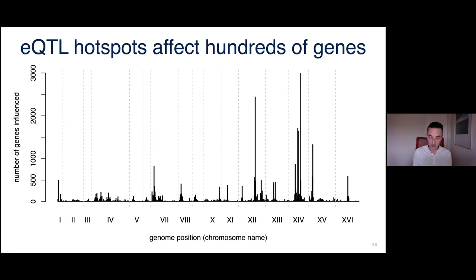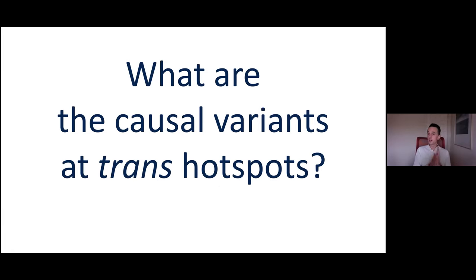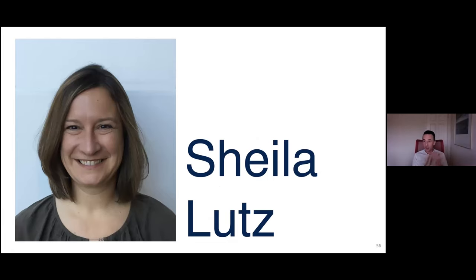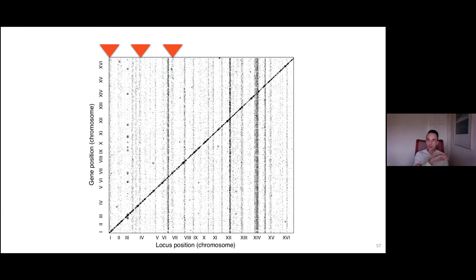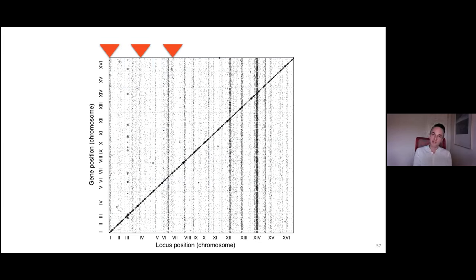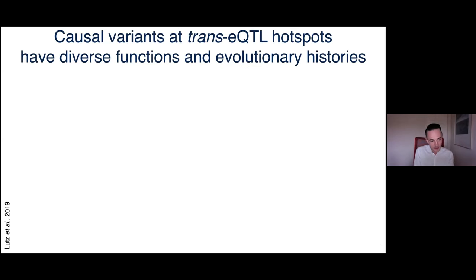Sheila Lott, our research scientist, published a paper last year drilling down to the causal variant in three of these hotspots using a CRISPR-based allelic engineering approach. The big picture: she found a causal variant in each of the three hotspots.